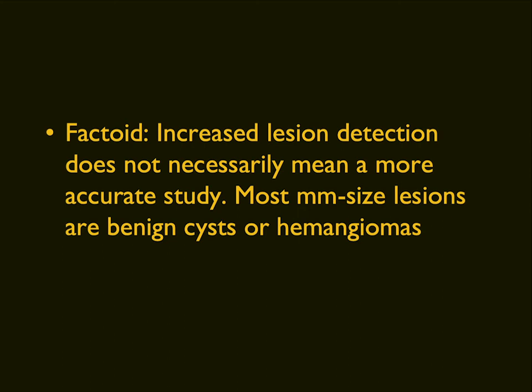Many of the lesions we pick up are too small to classify — small cysts, hemangiomas, or hematomas. But in a patient with colon cancer, if you say there's a three-millimeter something and you can't rule out a met, you go from stage one to stage four. So it's helpful to pick up lesions, but what's really helpful is to classify them. Lesions commonly have signatures, not always, but most of the time, and we can do a lot by knowing those specific signatures.